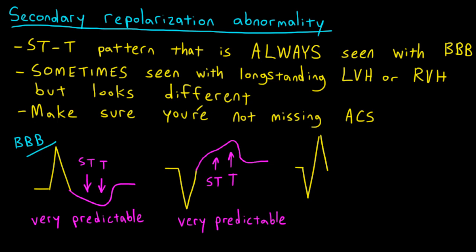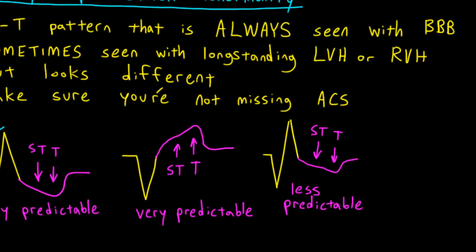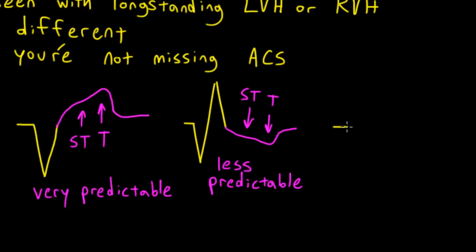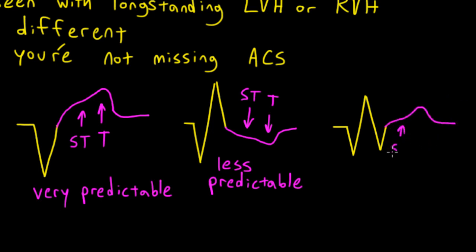When your wide QRS complex is biphasic, it's harder to predict which way the ST segments and T waves will point. Usually the secondary repolarization abnormality points opposite to the terminal portion of the QRS complex — so if the end of the QRS is positive, you'll usually see ST depression and T wave inversion, but it's not very predictable. When the QRS is triphasic, it's even harder to predict, and it's not worth jumping to any conclusions.